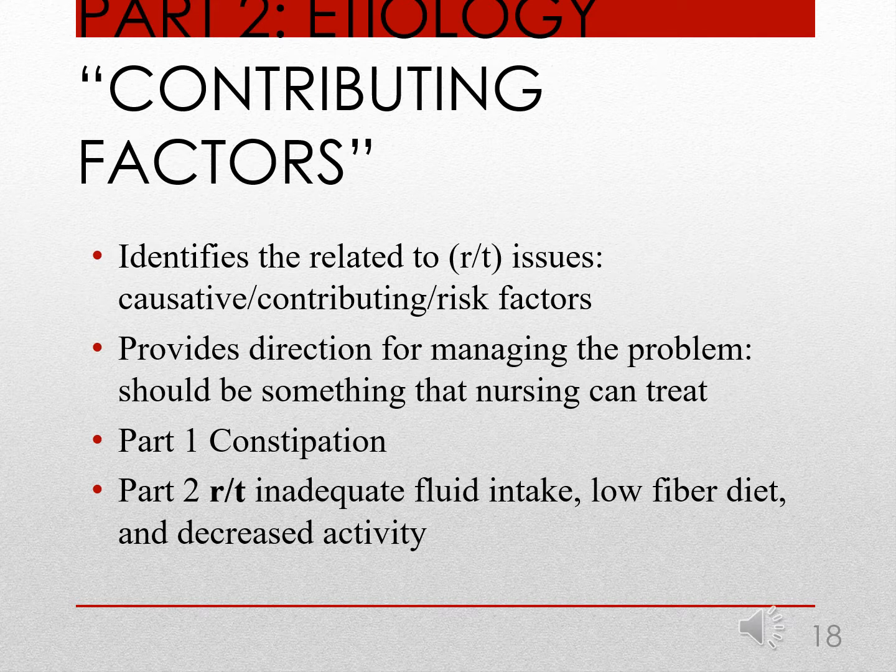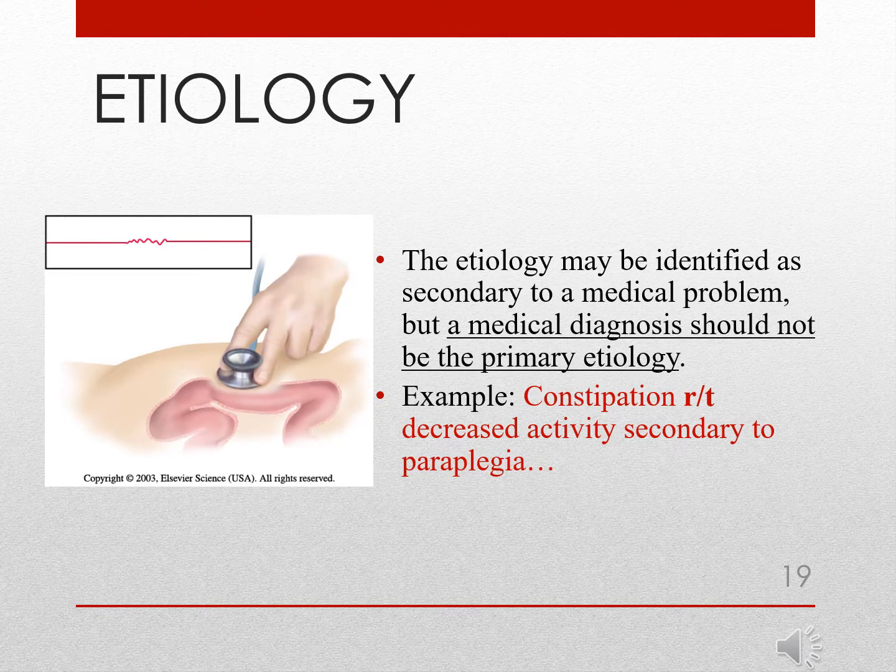The second step to writing the nursing diagnosis will be to add the contributing factors or etiology — these are the related-to issues. For example, we started with the diagnostic label constipation; now we'll add the etiology, which would be related to inadequate fluid intake, low fiber diet, and decreased activity. We can also look at the etiology as being secondary to a medical diagnosis. You can't write constipation related to paralysis; however, you could write constipation related to decreased activity secondary to paraplegia.